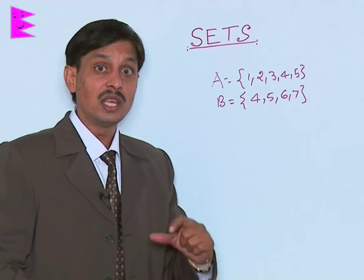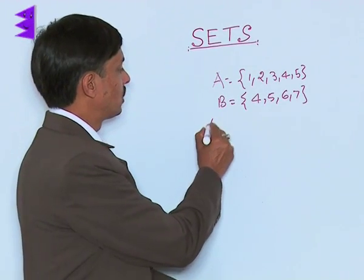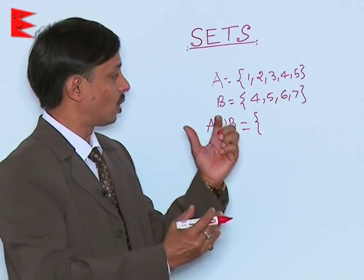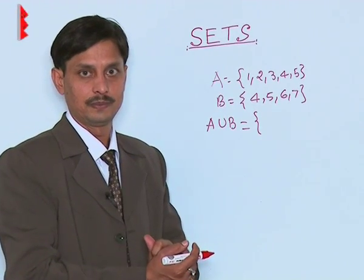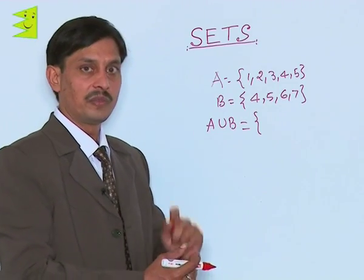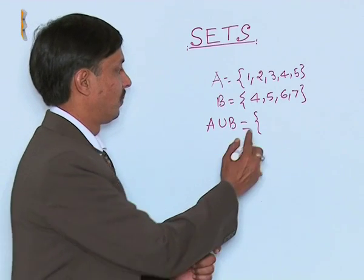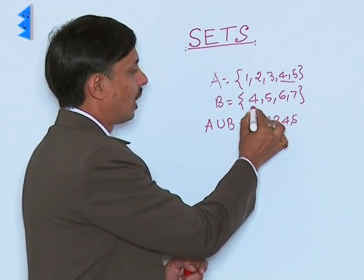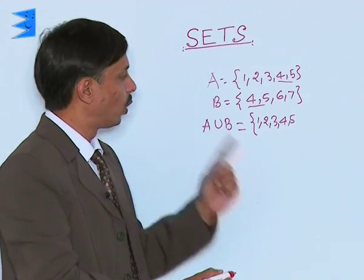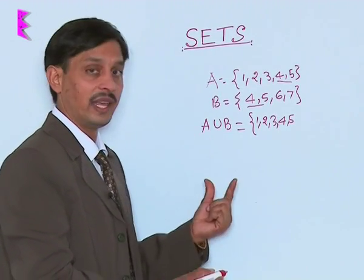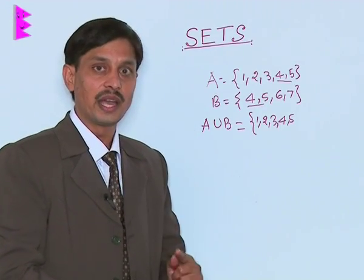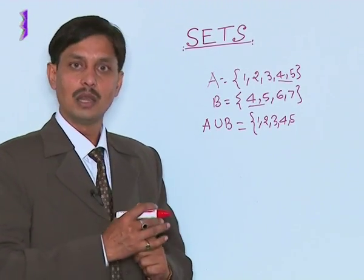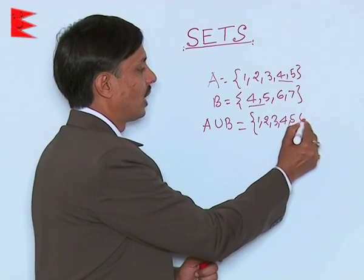Union is applicable even for more than two sets. A union B means grouping the elements of sets A and B together. Notice that 4 and 5 are elements present in both sets. When writing the union, we do not write elements twice. Always remember, in any set no element can repeat. So the result includes 1, 2, 3, 4, 5, then 6 and 7.